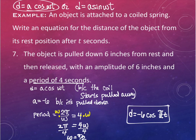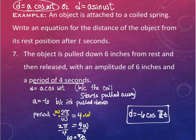Two things make this a little complicated: first, deciding whether to use sine or cosine - an easy place to make a mistake. Second, actually solving for ω correctly - don't just plug the period value in directly for ω; you have to solve for it using the period formula.